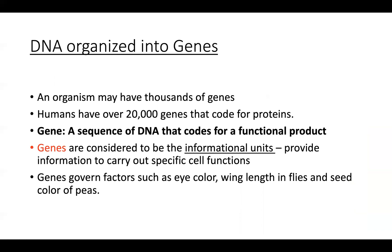The point we're making is that when generating new cells, the genetic information needs to be copied accurately. DNA is organized into genes. A gene is nothing more than a sequence of DNA coding for a particular product — in this case, proteins. We know that proteins are the functional units of cells. Genes are considered informational units that provide information to carry out specific cell functions.